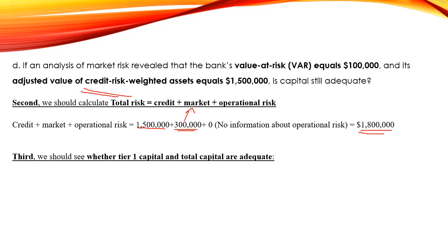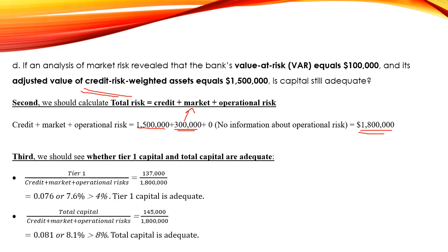Finally, after calculating the total risk, we can assess whether Tier 1 and total capital are adequate. Tier 1 over total risk equals 7.6%, which is higher than the required 4%, so Tier 1 is adequate. Total capital over total risk equals 8.1%, which is higher than the required 8%, so total capital is also adequate.